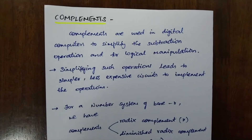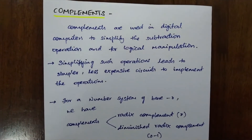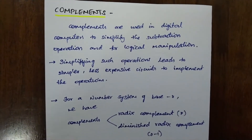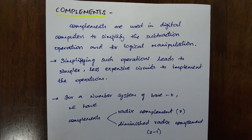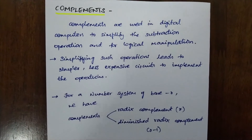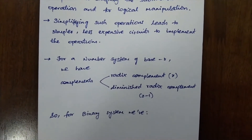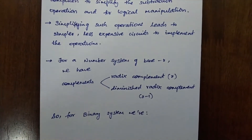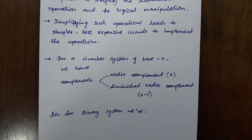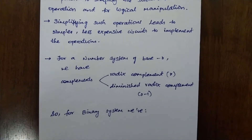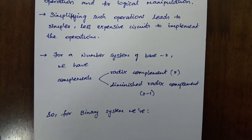Complements are used in digital computers to simplify the subtraction operation and for logical manipulation. Simplifying such operations leads to simpler, less expensive circuits to implement. For a number system of base r, we have two types of complements: the first is the radix complement and the second is the diminished radix complement. The radix complement is of base r, and the diminished radix complement is r minus 1.